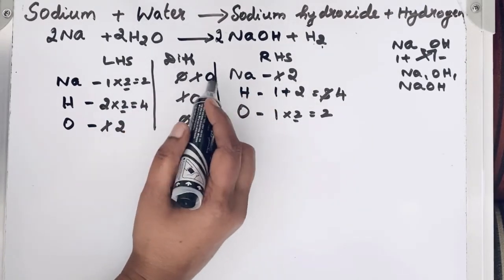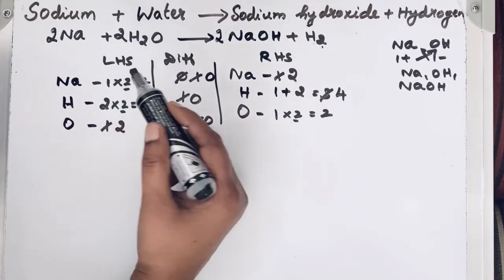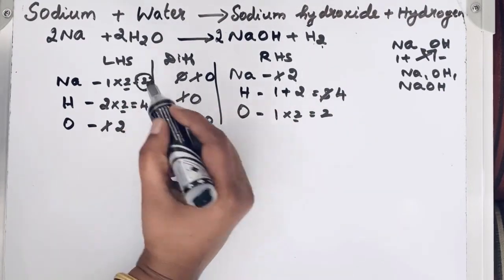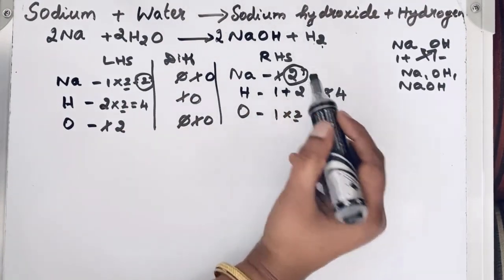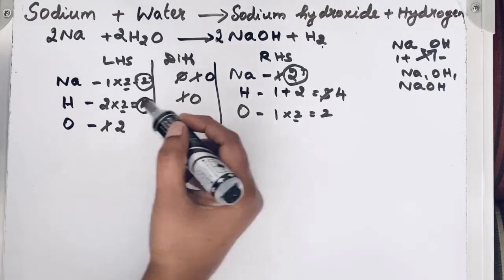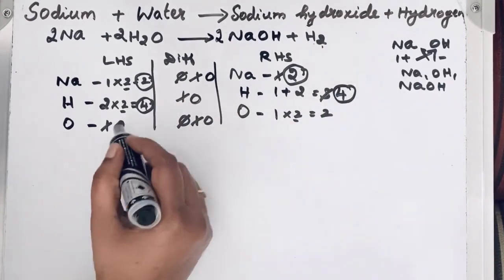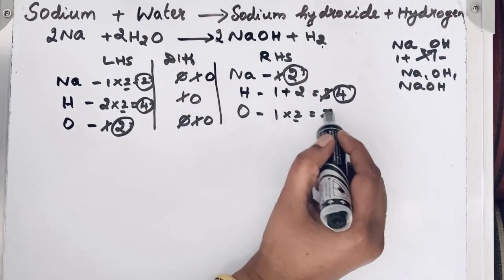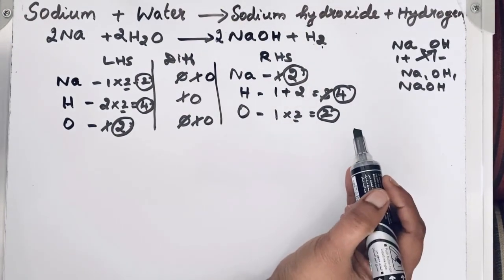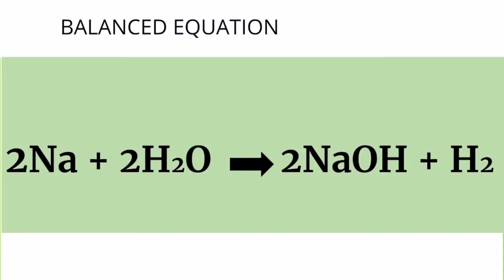Let us check once again. Left hand side atoms and right hand side atoms. For sodium, number of atoms 2. Then for right hand side, also 2. For hydrogen, here it is 4. Then right hand side, also 4. For oxygen also, 2. And here also, 2. So it is completely balanced. So the answer is,